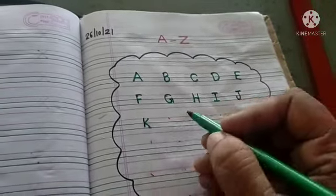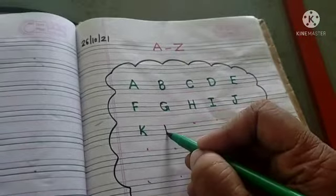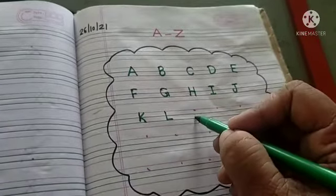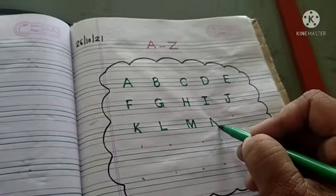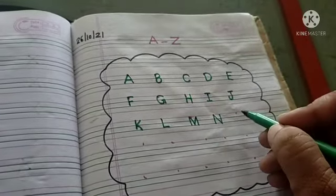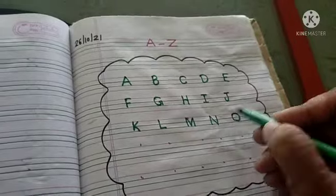K for kite. L for lion. M for mango. N for nest. O for orange.